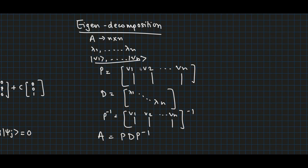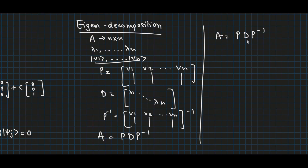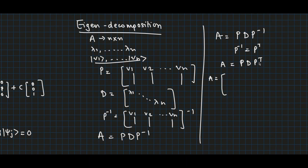Spectral decomposition is a special case of eigendecomposition where the eigenvectors vi are also orthogonal to each other. We can decompose a normal matrix A — which can be symmetric, Hermitian, or any normal matrix — such that A equals P D P-inverse. Here, since P is orthogonal, P-inverse equals P-transpose, so we write A as P D P-transpose.